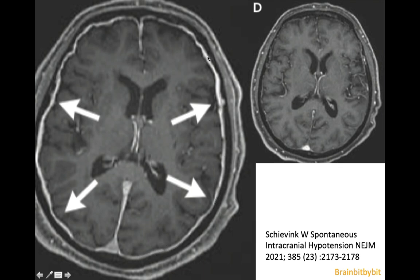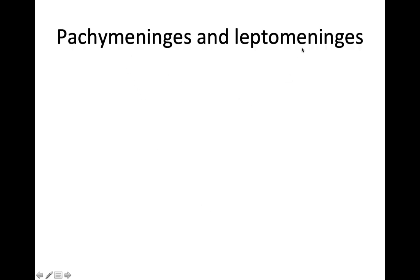This dilation leads to pachymeningeal enhancement, as you can see here, and sometimes there is also a convex border of the venous sinuses. The pronounced pachymeningeal enhancement in intracranial hypotension is mainly seen in the acute phase; in the chronic phase it is more the sagging of the brain, the pituitary, the optic nerve sheaths, and the other signs mentioned. To conclude, I want to make a bridge to the next video, in which we are going to look at pachymeningeal and leptomeningeal enhancement of the meninges.